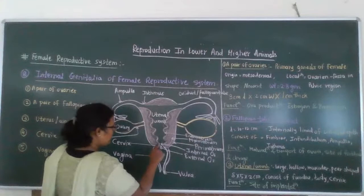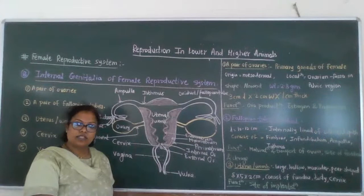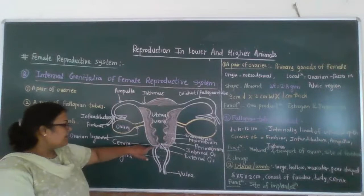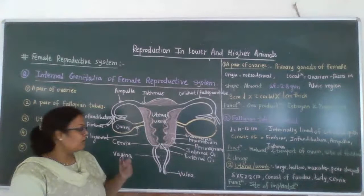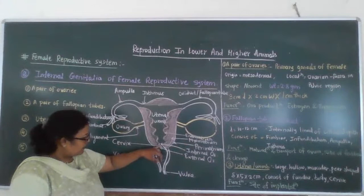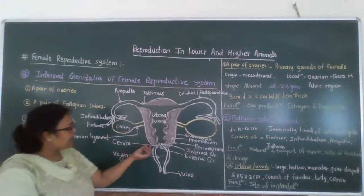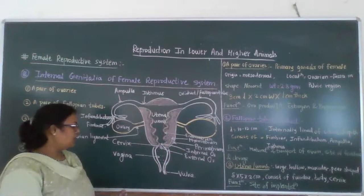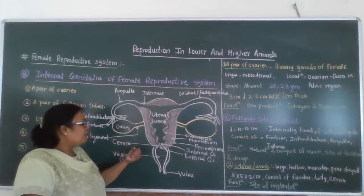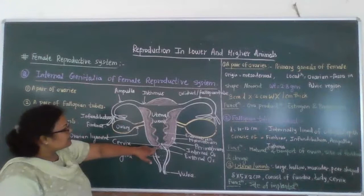The next part is the cervix. Its length is about 2.5 cm. The cervix is the most tenacious sphincter in the body of a human female. When the cervix opens into the vagina, that opening is the external os, and when the cervix opens into the uterus, that opening is the internal os. During the pregnancy period, the internal and external os get closed by a mucous plug.